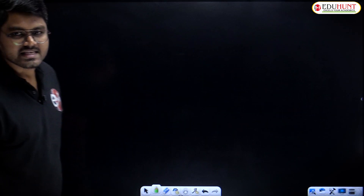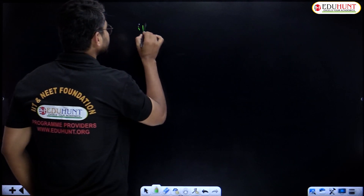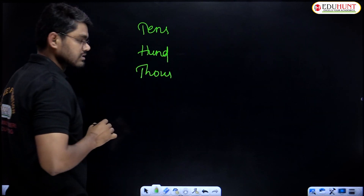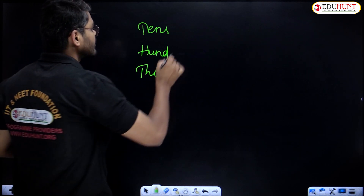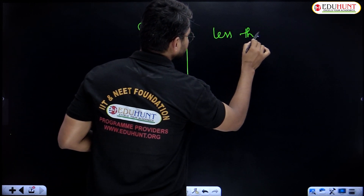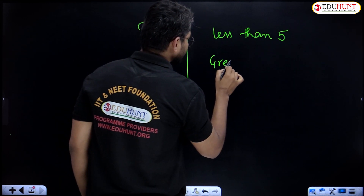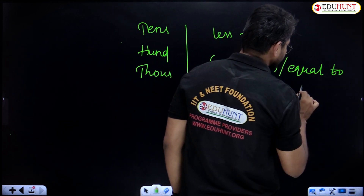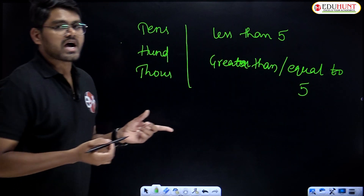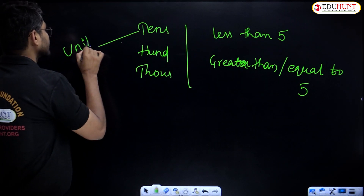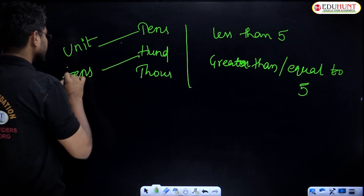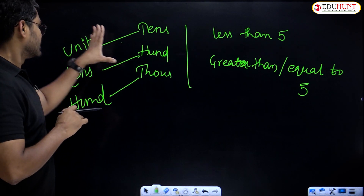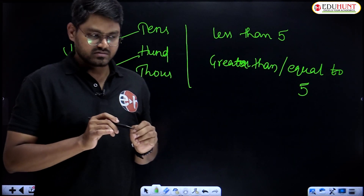Did you understand, students? Very easy concept. In rounding off to tens, hundreds, and thousands, what do we have to do? Two conditions: less than 5, and greater than or equal to 5. Which digit do we consider? In tens, consider the unit digit. In hundreds, consider the tens digit. In thousands, consider the hundreds digit. If you remember these points, you can do the sums very, very easily.